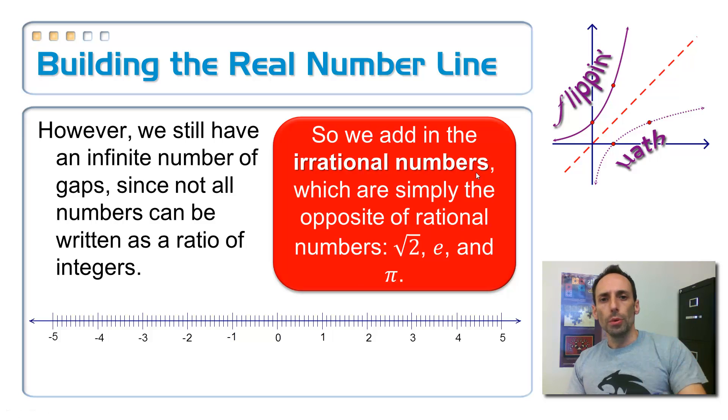So the irrational numbers, they're the exact opposite. You cannot write them as a fraction. You cannot write them as a ratio of two integers. And some examples of those are, some famous examples are like square root of 2, and this number e, we're going to learn a lot about e, and then last year, of course, you did a lot of stuff with pi.